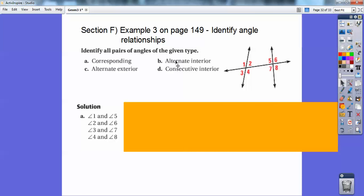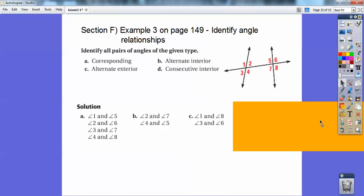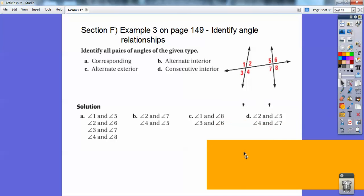Alternate interior angles, that would be like four and five and two and seven. They alternate on the sides of the transversal. Alternate exterior, way out here outside is alternating with six right there, and then one and eight are alternate exteriors. And then consecutive interiors, they're the same-sided interiors, so like four and seven and two and five. Those guys would be consecutive interior angles.